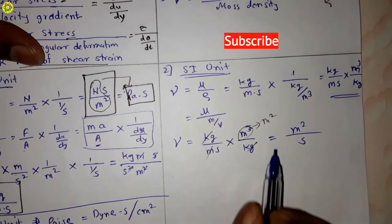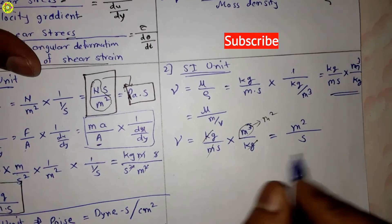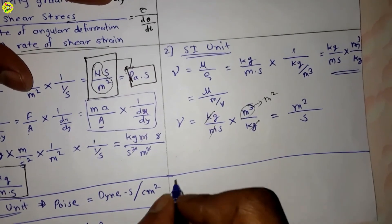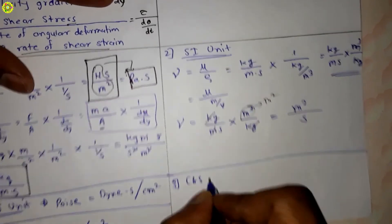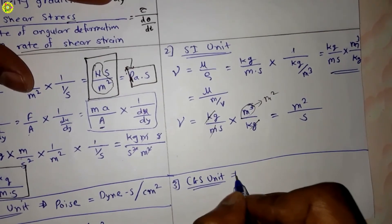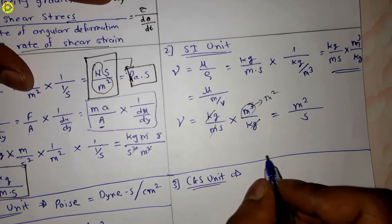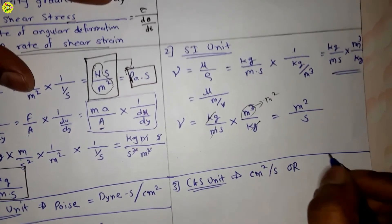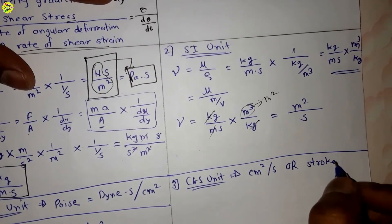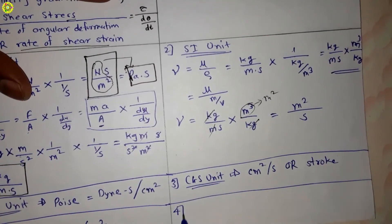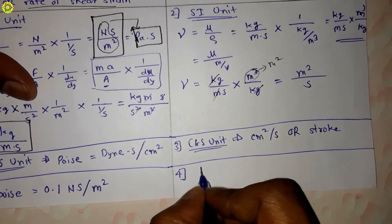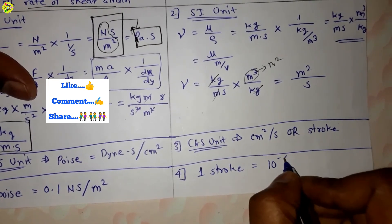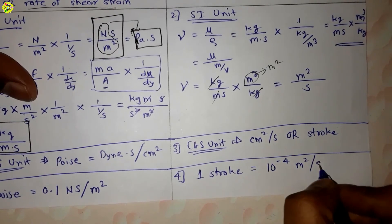The CGS unit of kinematic viscosity is centimeter square per second (cm²/s), also called stoke. The conversion is: 1 stoke = 10⁻⁴ meter square per second (m²/s).